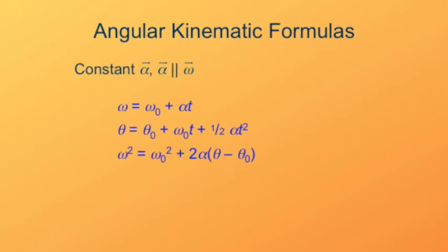The square of the angular velocity at any time is equal to the square of the starting angular velocity plus two times the acceleration times the angular displacement.